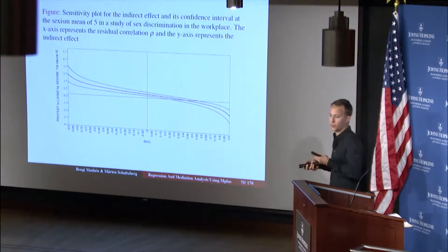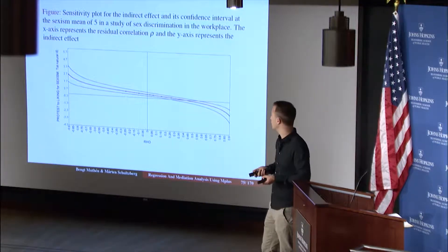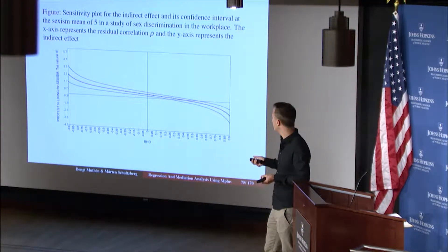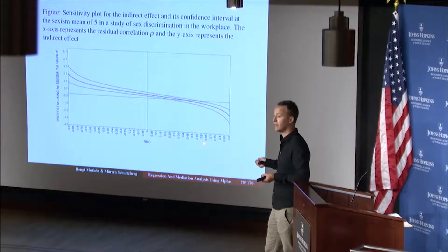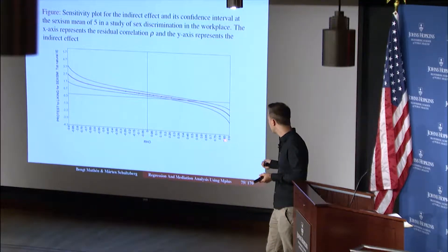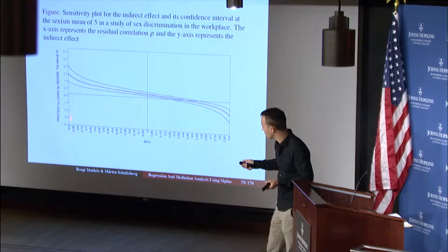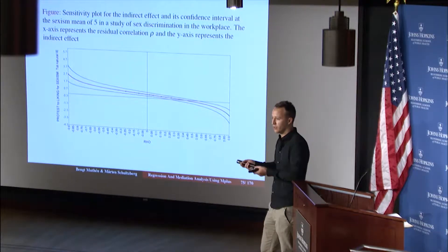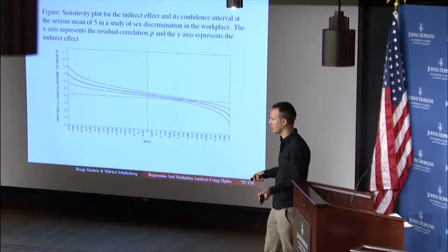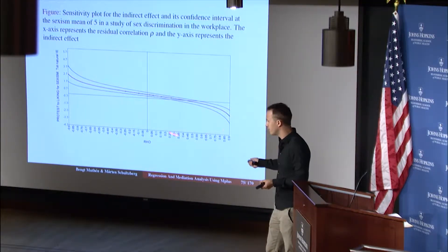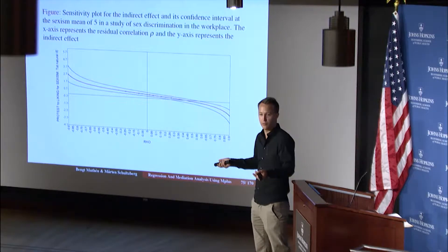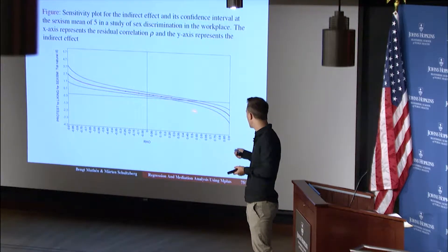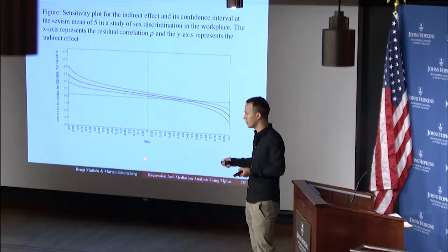And we don't know what it is because we cannot identify this correlation. So what we do is that we fix the correlation at different values. So one of these values is the true value. Now we go from minus 0.9 to 0.9. So we don't cover up to one because that's not reasonable. But some of these values are the correct one. We don't know what it is.